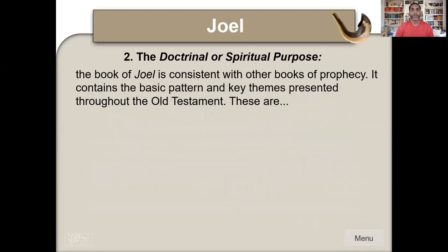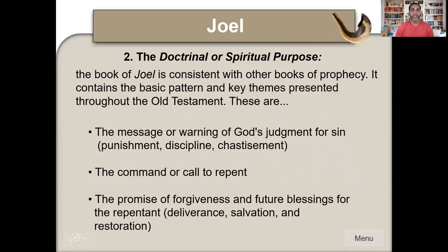The doctrinal purpose: the book of Joel is consistent with other books of prophecy, containing the basic pattern of the Old Testament — the message of warning of God's judgment for sin, punishment, discipline, and chastisement; the command to repent; and the promise of forgiveness and future blessing for the repentant, deliverance, salvation, and restoration. Repentance is not a New Testament word — it's been around from the Old Testament. God's desire was always for his people to repent of their sins and turn back to him.